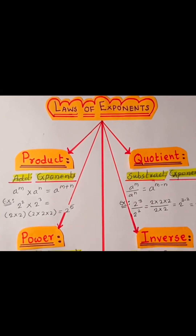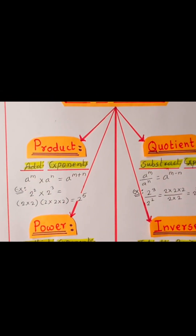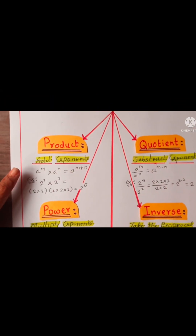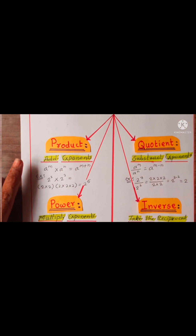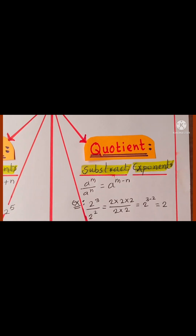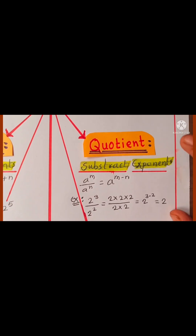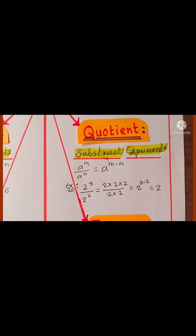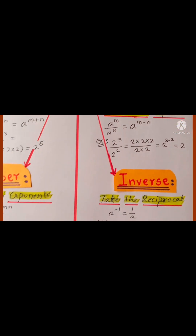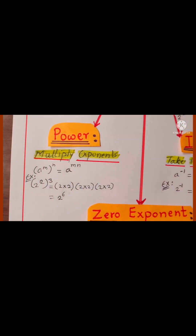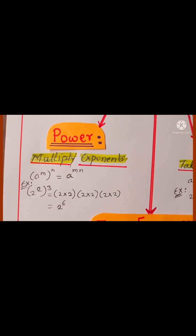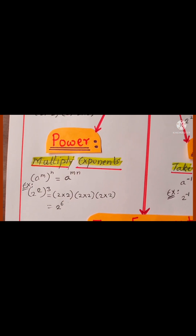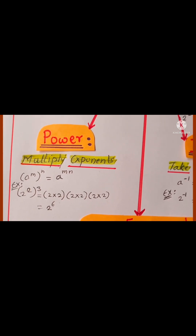The first rule is the product rule, which means we have to add the exponents. The second rule is the quotient rule, which means we have to subtract the exponents. The third rule is the power rule, which means we have to multiply the exponents.